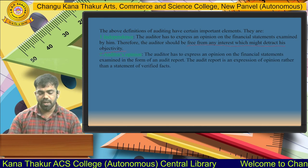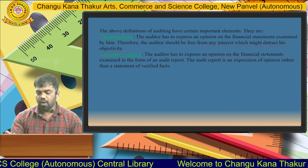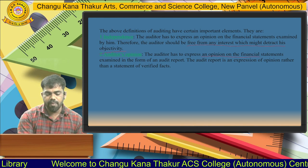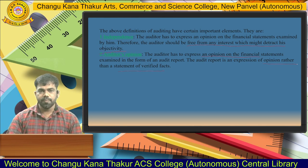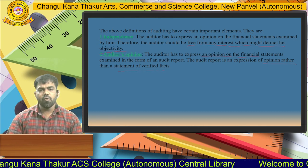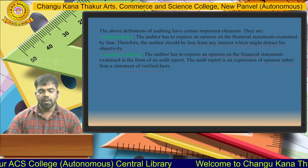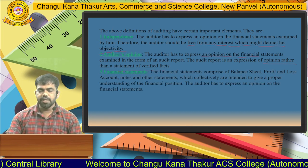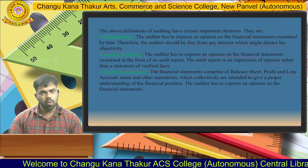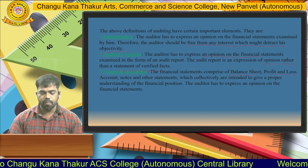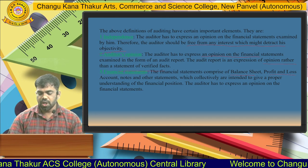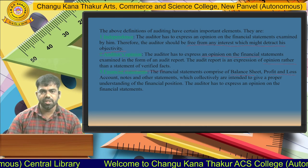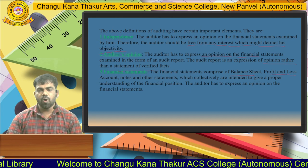The second element is the auditor's opinion. The auditor has to express an opinion on the financial statements examined, in the form of an audit report. The audit report is an expression of opinion rather than a statement of verified fact — whatever the auditor feels is mentioned in the audit report. The third element is financial statements, which comprise the balance sheet, profit and loss account, notes, and other statements intended to give a proper understanding of financial position.